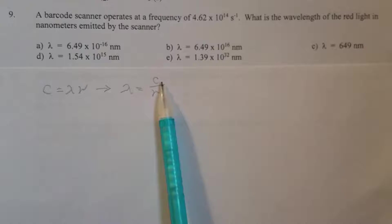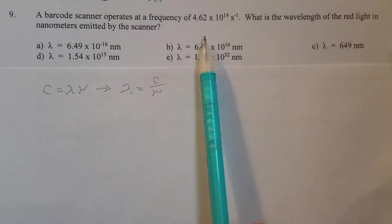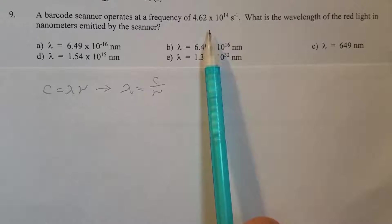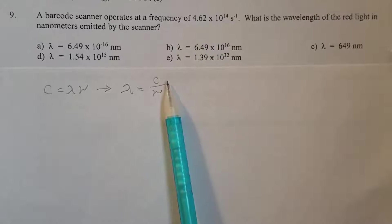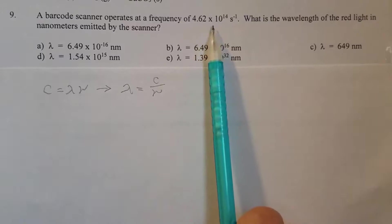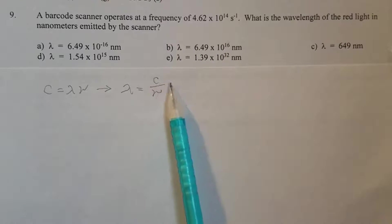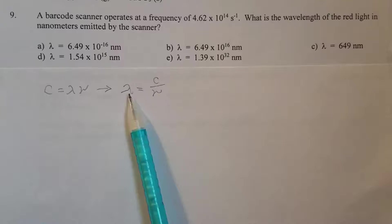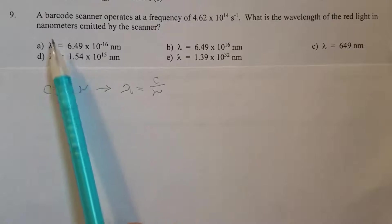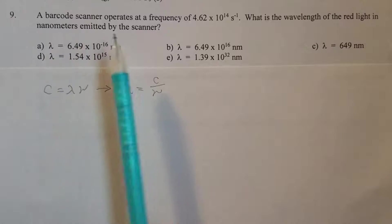So the speed of light is not given in the problem, but it's constant. It will be made available if you take the test. Frequency is already given, so we should be able to calculate what is asked, the wavelength, but make sure it has to be in nanometers.